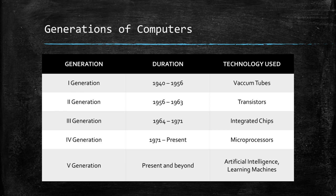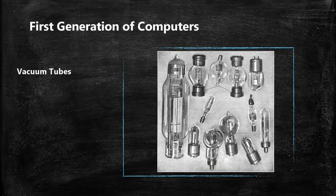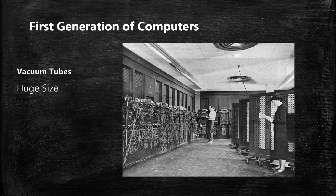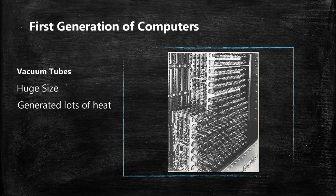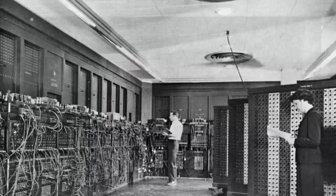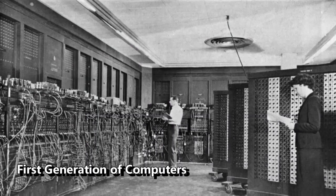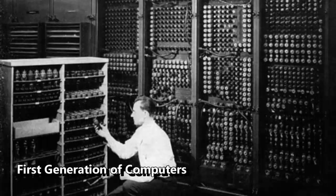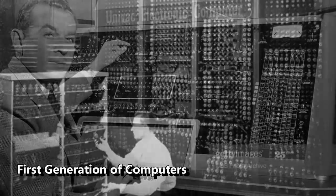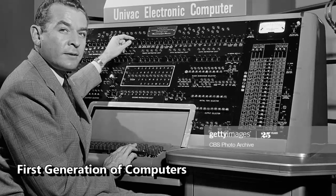First generation computers were based on machine-level language and used vacuum tubes to perform calculations. The mechanics of vacuum tubes made these computers huge in size — as large as rooms — generating a lot of heat and requiring air conditioning to cool them. They had limited processing power and solved only one problem at a time. As input devices, they used punched cards and paper tapes. Two notable computers of this generation were the UNIVAC and ENIAC machines. The UNIVAC was the first-ever commercial computer, used by the US Census Bureau.